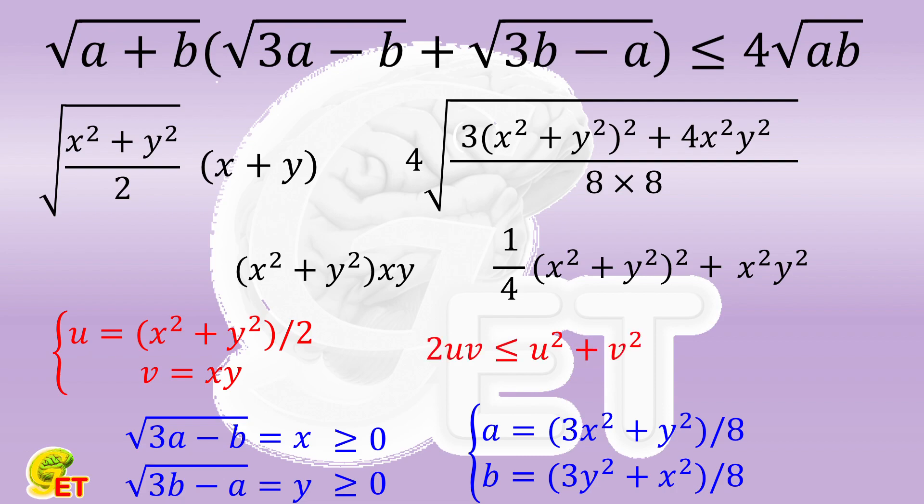Then twice UV cannot be bigger than U squared plus V squared. We therefore complete the proof.